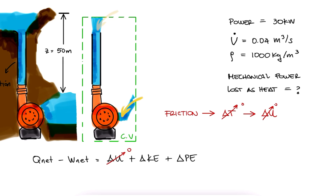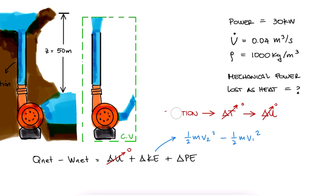Depending on the inlet and exit areas, the inlet and exit velocities might be different, but velocities of the same order of magnitude make little difference in terms of the other energy changes. More importantly, our control volume's boundaries are located on the free surface of the water bodies, so the velocities there are close to zero. So we'll assume this to be negligible as well.